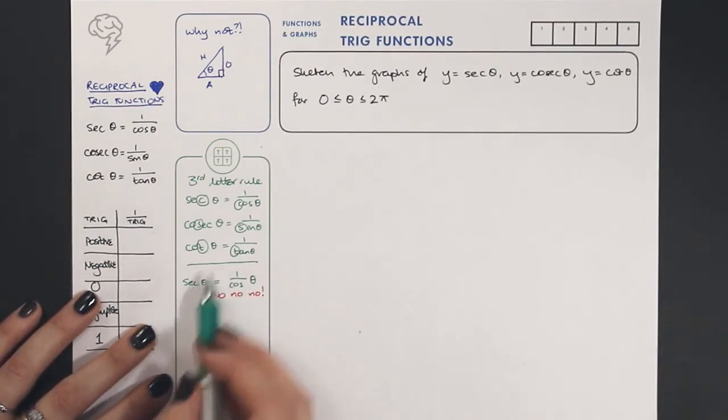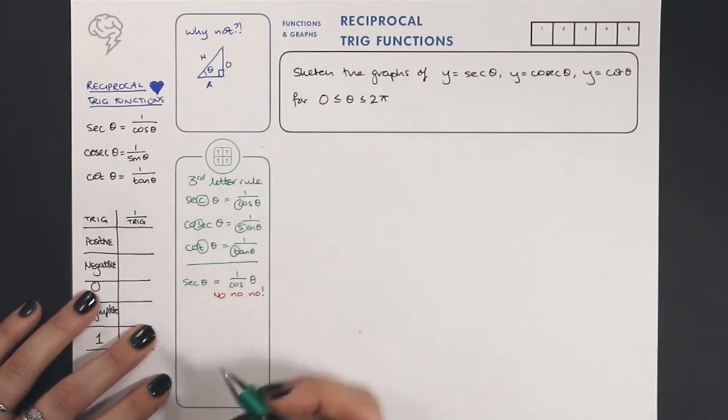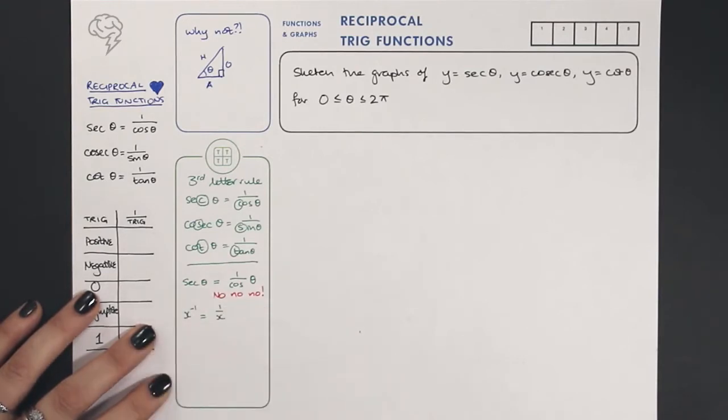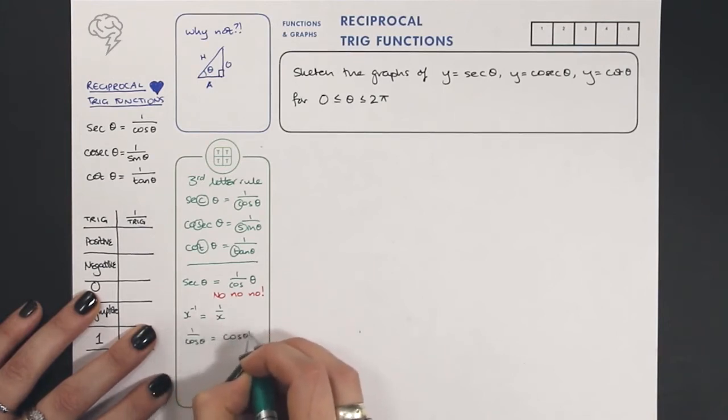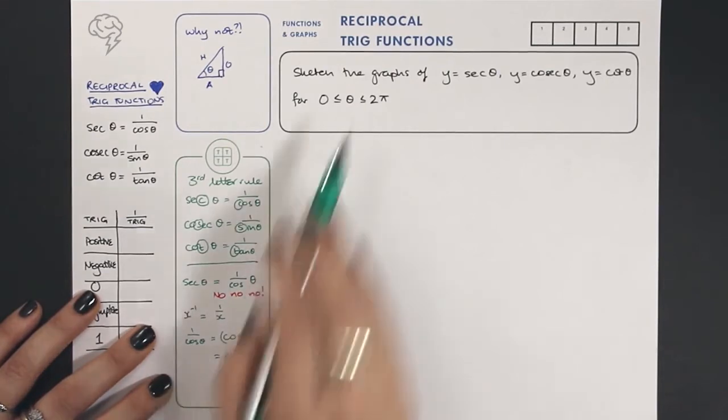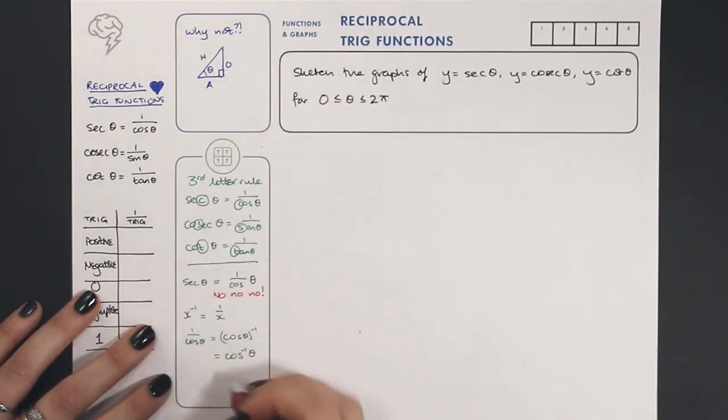And the other thing is we use the notation in maths to the power of minus one. So x to the minus one is one over x. So that means we would say, okay, so in that case, one over cos theta must be cos theta to the minus one. That's true. But we write cos theta squared, we move it here, don't we? So that must be the same as cos to the minus one theta. And this would make complete sense. But this notation is used for the inverse, not the reciprocal.